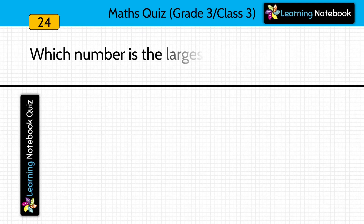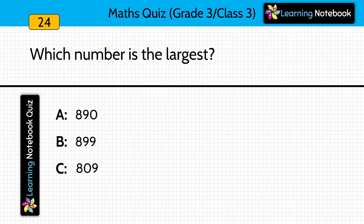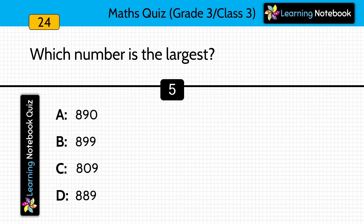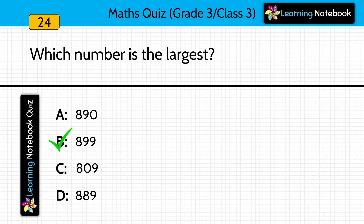Next question: Which number is the largest? Here 4 numbers are given — you have to tell which one of them is the largest. Look at the options carefully. Answer is 899 — this is the largest number among the given options.